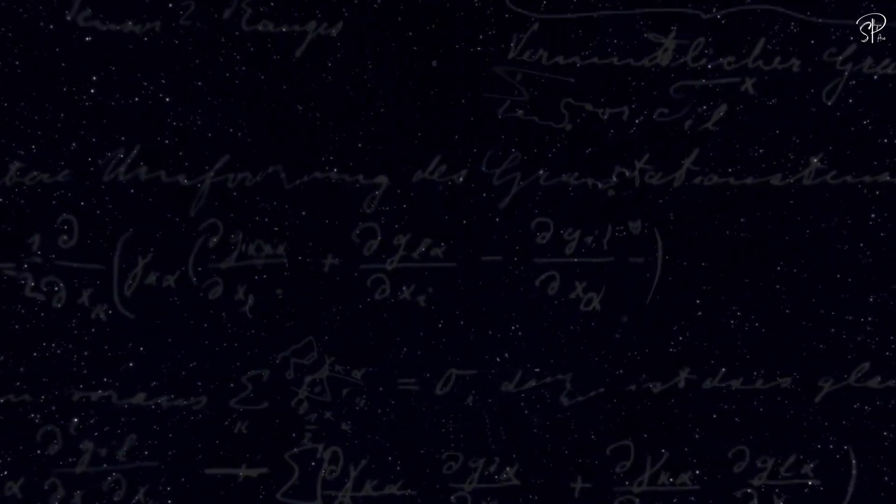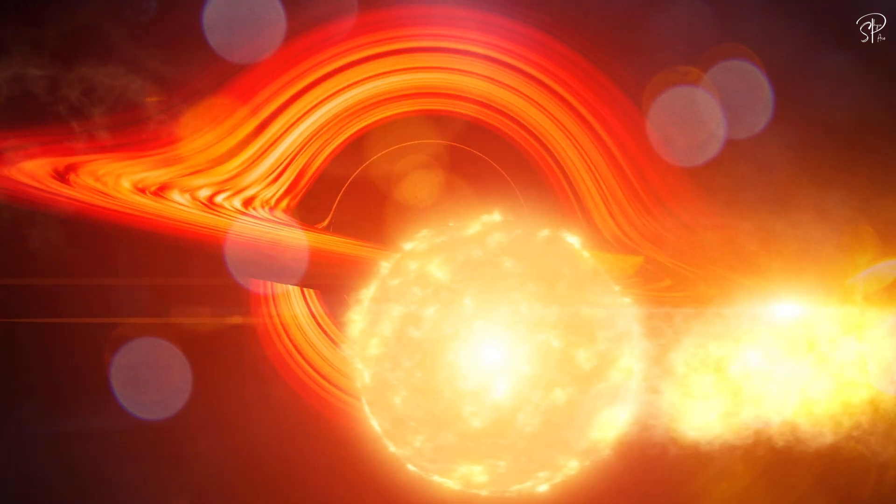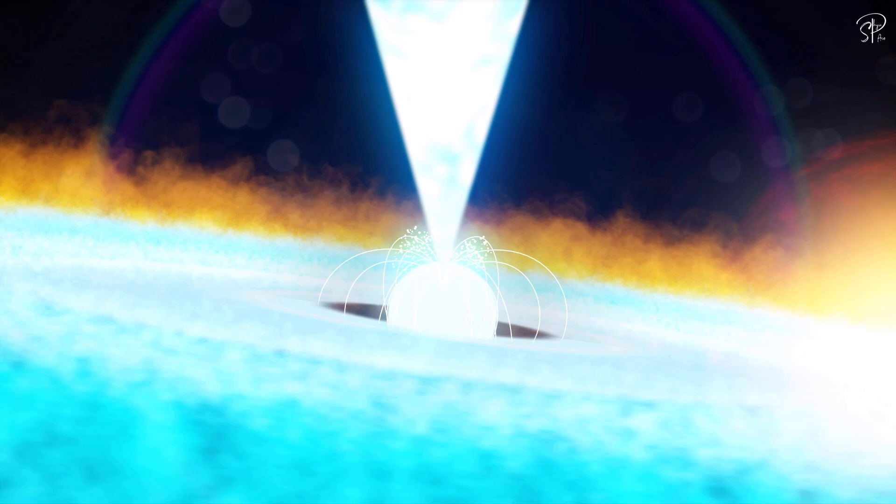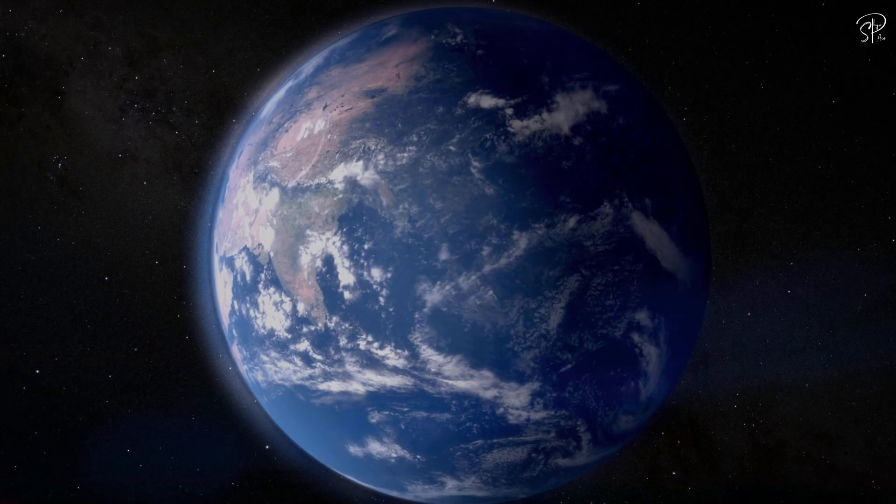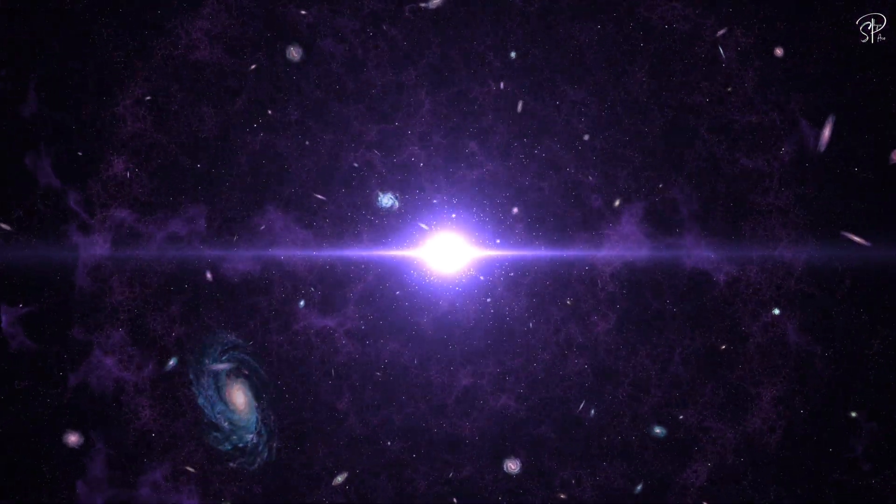be the source of all the matter and energy that we see in our universe. The first serious proposal that our universe might be inside a black hole was made by physicist Kip Thorne in 1994. Thorne proposed that our universe might have formed from a white hole, which is a hypothetical object that is the opposite of a black hole. White holes are thought to be very rare, but if they exist, they could emit matter and energy into our universe. In recent years, there has been growing interest in the idea that our universe might be inside a black hole.